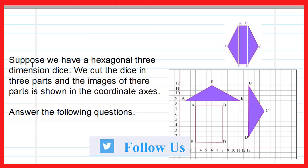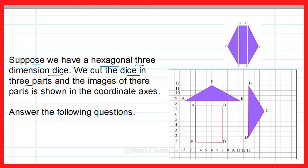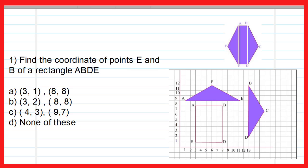Here is the question: suppose we have a hexagonal three-dimensional dice. We cut the dice into three parts and the images of those parts are shown on the coordinate axis. We have to answer the questions below. The first question asks us to find the coordinates of points E and B of rectangle ABDE.